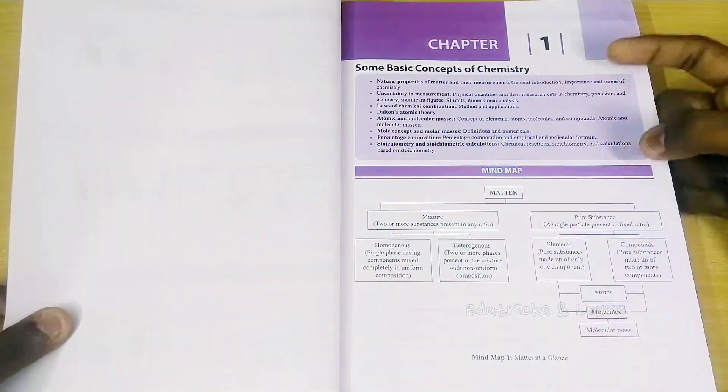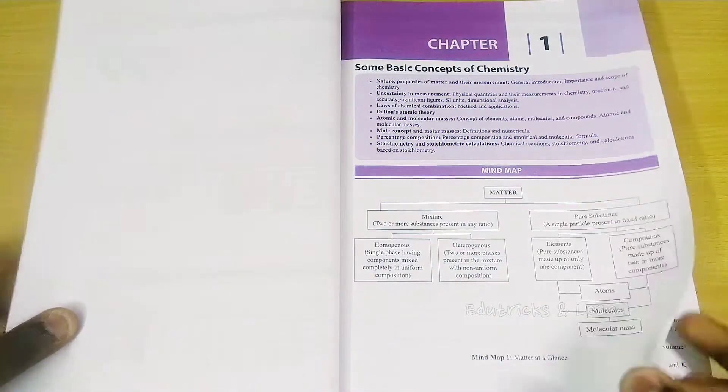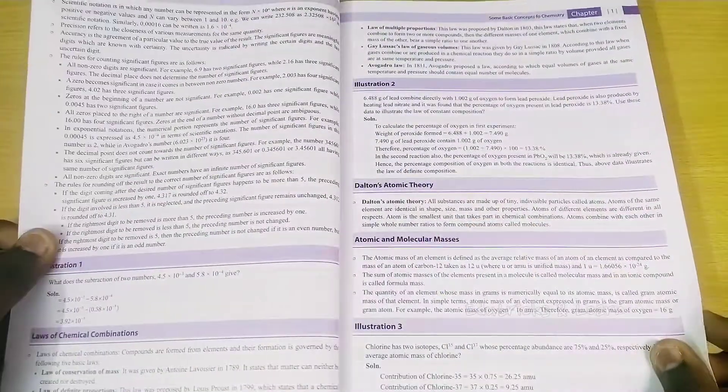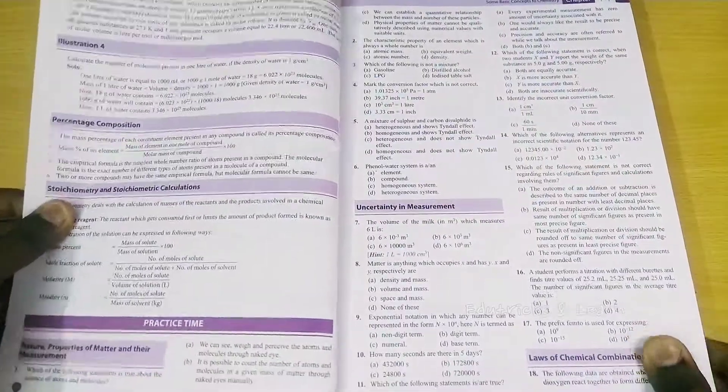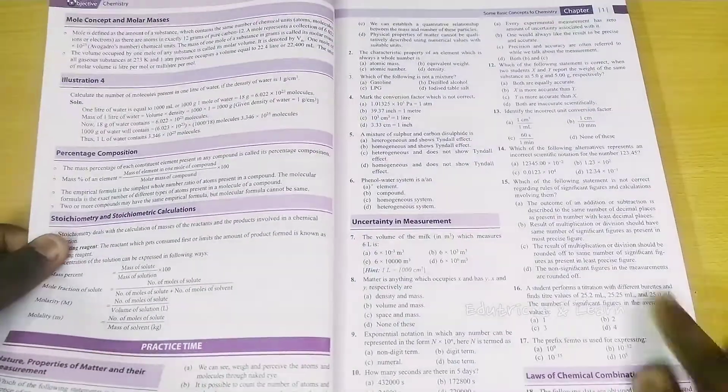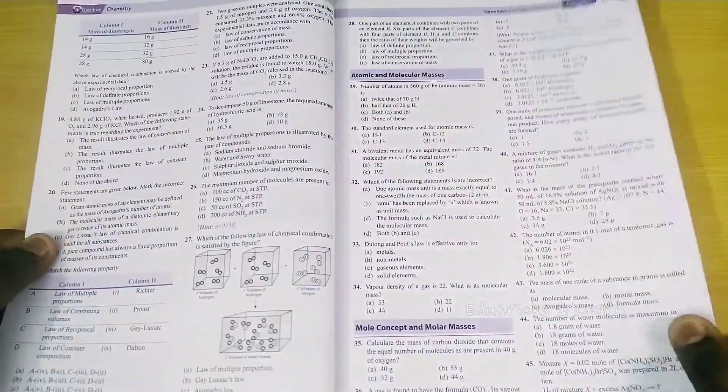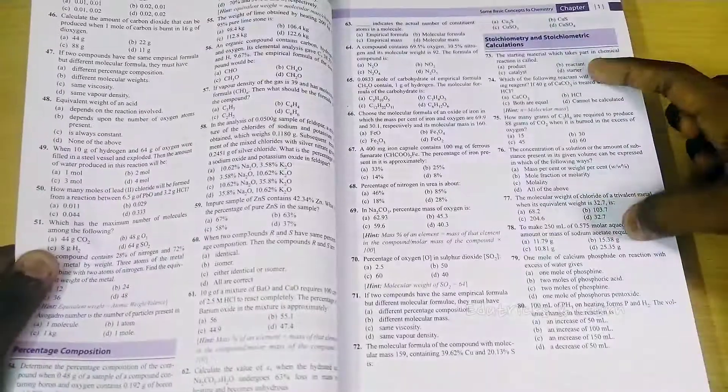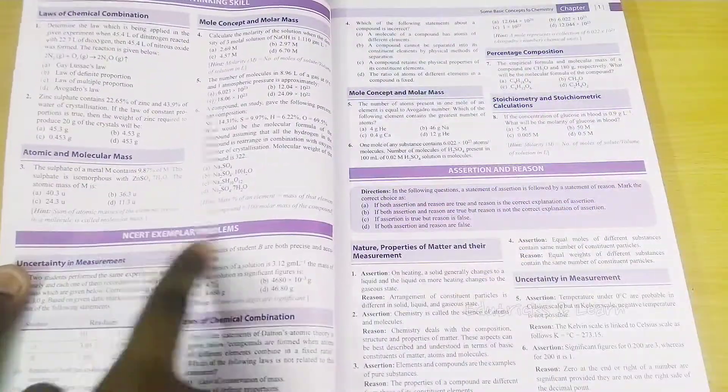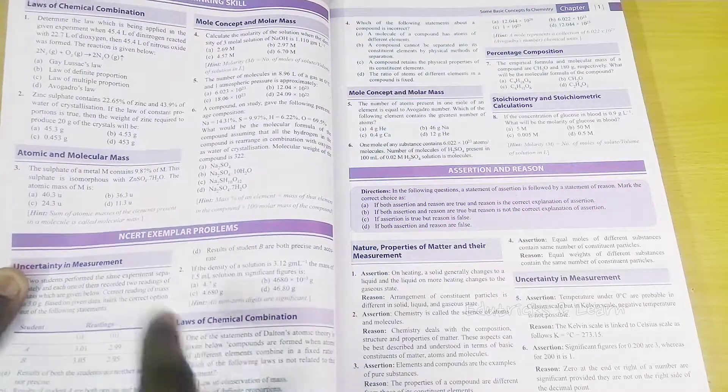In chapter 1, they've given the syllabus and starting with mind maps. After completing the mind map, they've given the recap, which is the notes of the complete lesson. After completing the notes, they've given the practice time with completely topic-wise MCQs. In one topic, they give some questions, and for the next topic, they give some questions.